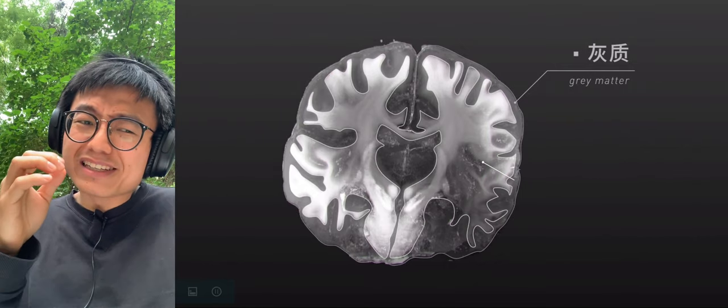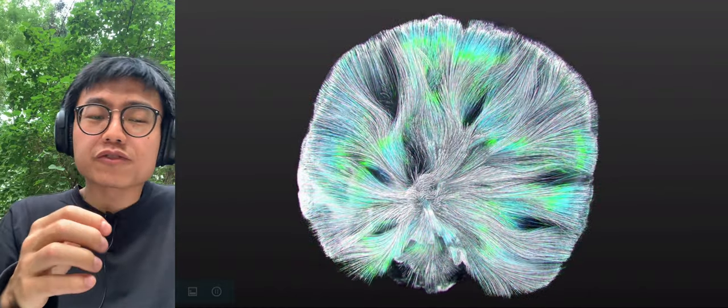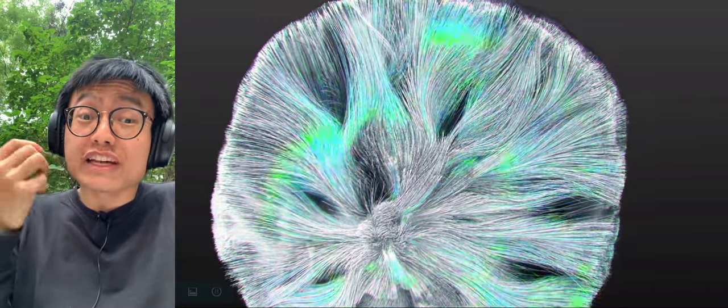Gray matter is mainly neurosomas and dendrites, while white matter is mainly millions of long axons which are surrounded by myelin. The white lipids, so they look whiter. These white cables connect gray matter from different brain regions to transmit electrical signals.